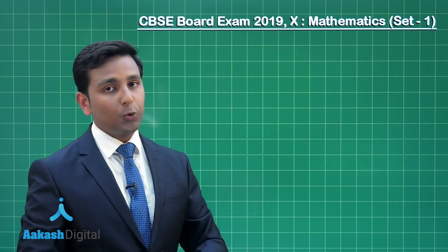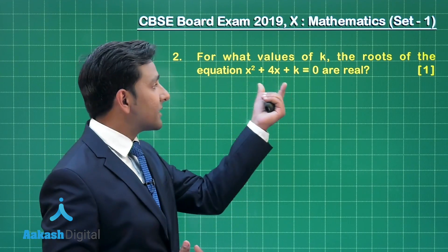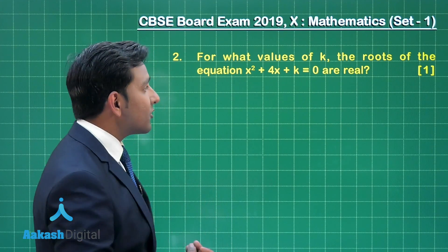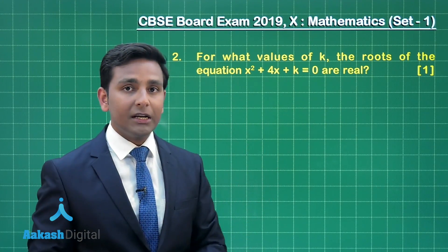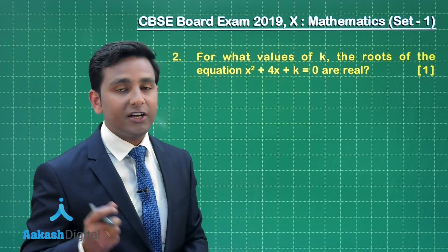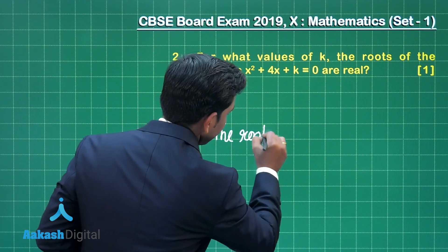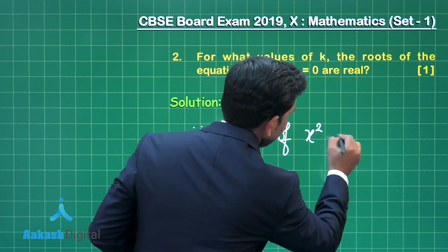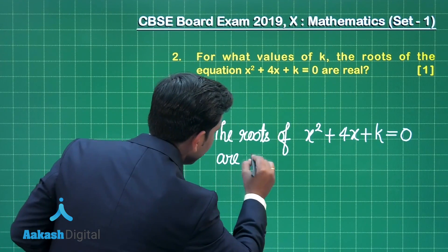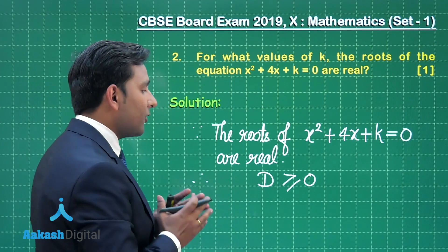Now let us solve question number 2. It states: for what values of k are the roots of the equation x² + 4x + k = 0 real? This question is from quadratic equations. For real roots of any quadratic equation, the discriminant must be greater than or equal to 0. This is the major concept behind this question. Here it is given that the roots of x² + 4x + k = 0 are real, therefore the discriminant must be ≥ 0.